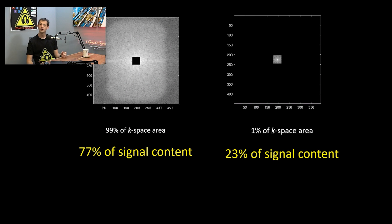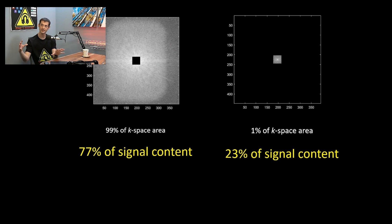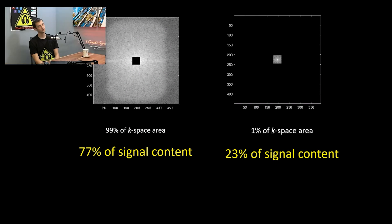Where does the information come from? As the MRI sweeps through all the frequency and phase encodes, 99% of that area actually represents about 77% of the total signal — and that 1% center holds almost 25%, a quarter of everything. That's why parallel imaging like GRAPPA fully samples the center — the engineers knew the center is super important.